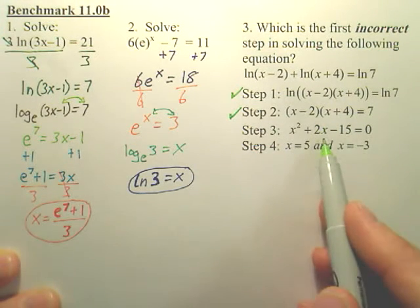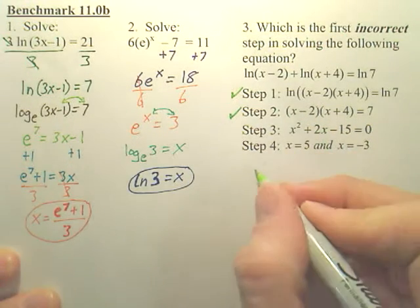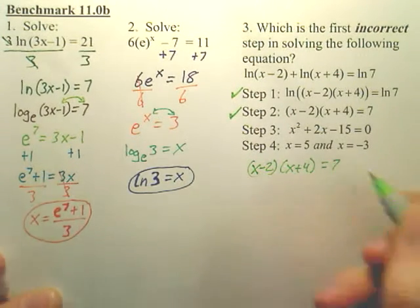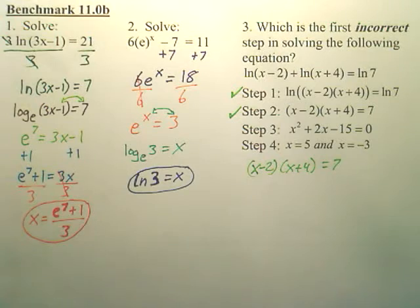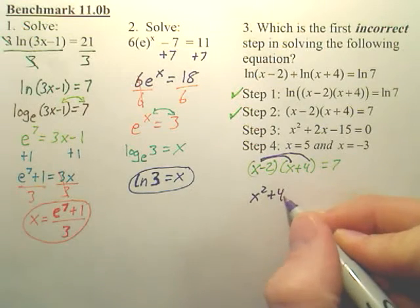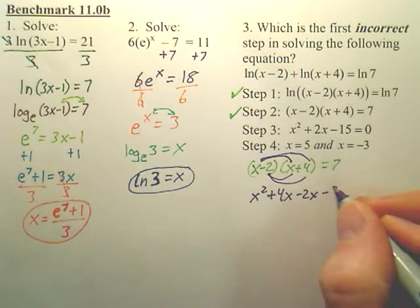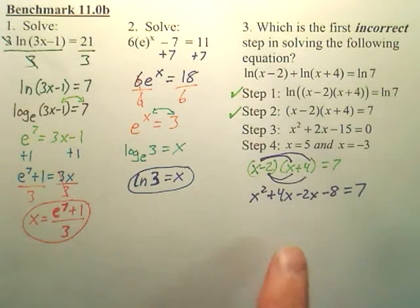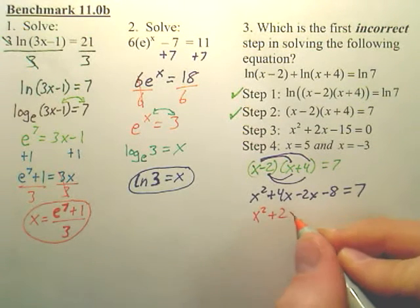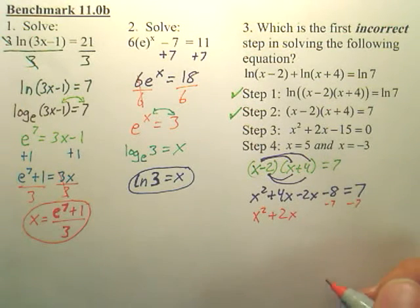Next step. How do you get from here to here? Well, it looks like here we foiled. Didn't you foil? And then it looks like the seven got moved over. So let's show the work on this one. So if we're going to do the work on this one, let's see. We foil. So this becomes x squared. This becomes 4x minus 2x minus 8 equals 7. Now, when you do that, you get x squared plus 2x. And then if I minus this 7 over, you get minus 15.